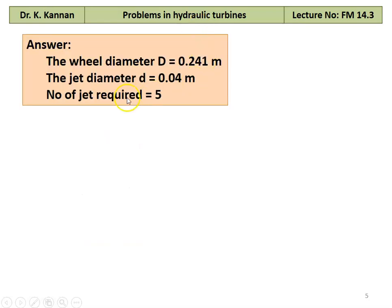Answer to Example 1: Diameter of the wheel D = 0.241 m, diameter of the jet d = 0.04 m, and number of jets required = 5.